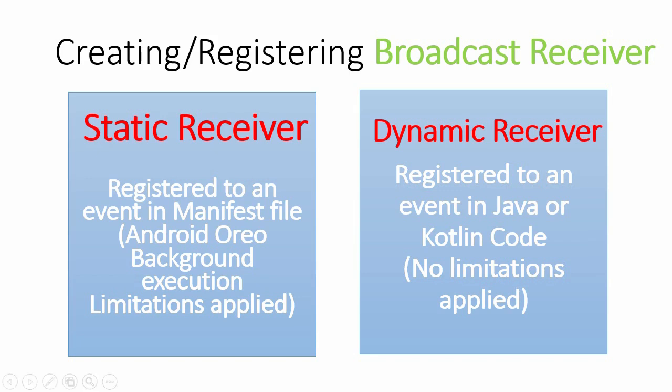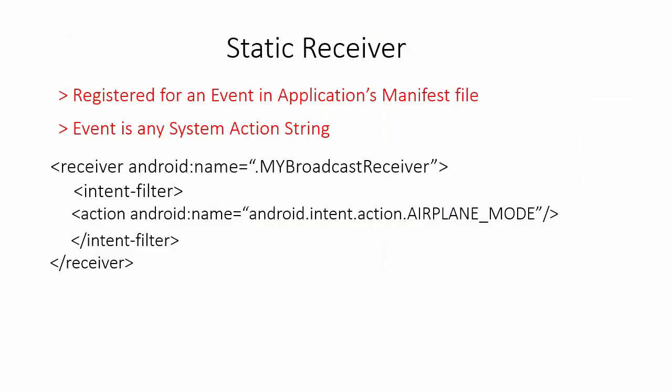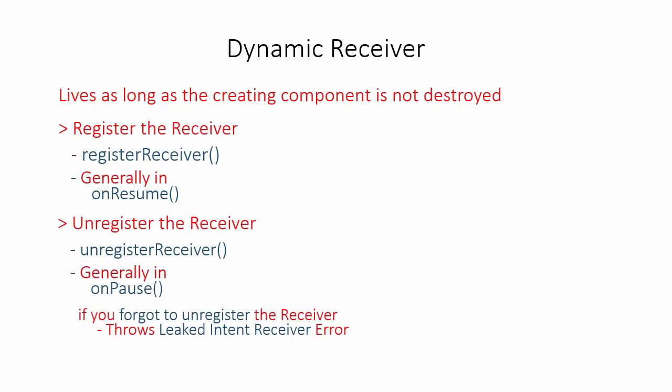To use a static receiver, it must be declared in the Android manifest file inside the application tag. You provide the class name of the receiver you created. In this example, I am registering it for airplane mode — so whenever airplane mode is enabled or disabled, we will get a message.